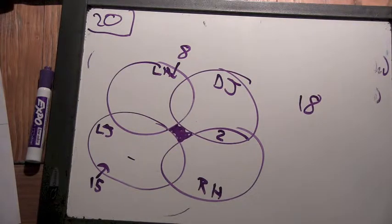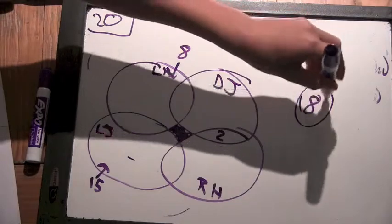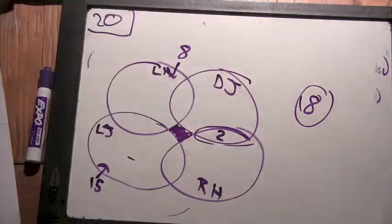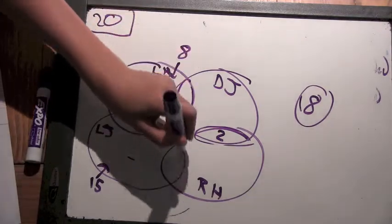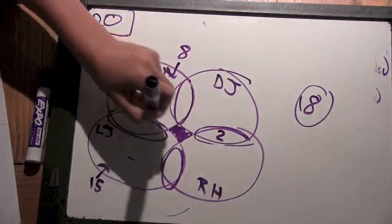So as he said, there are 18 people left. The 8 and 15 add up to 23. So in these circles, there has to be an overlap of 5.